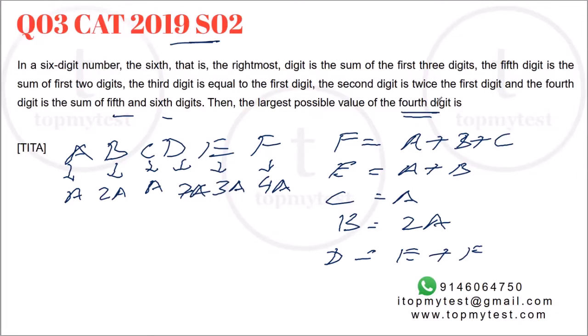You need to find the largest possible value of the fourth digit. Now, each of them are digits. So, a can be 1, 2, etc. Now, if I put a equals 1, d will be equal to 7. If I put a equals 2, d will be equal to 14. Now, 14 is not a digit. It's a number, it's a two digit value. So, 7 will be the maximum possible value. Again, roughly around one and a half two minutes to solve. Be patient. This question solves itself.